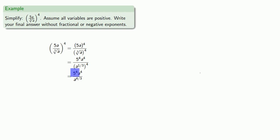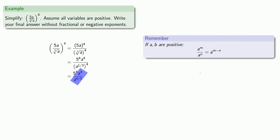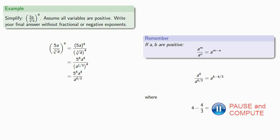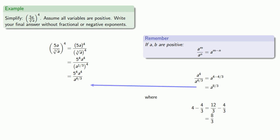We leave five to the fourth as a number. The rest is a quotient: a to the fourth over a to the four-thirds. The rules of exponents say that for a quotient with the same base, we subtract the exponents. So a to the fourth over a to the four-thirds is a to the power four minus four-thirds, which requires a bit of fraction arithmetic. Our simplified form is a to the power eight-thirds.